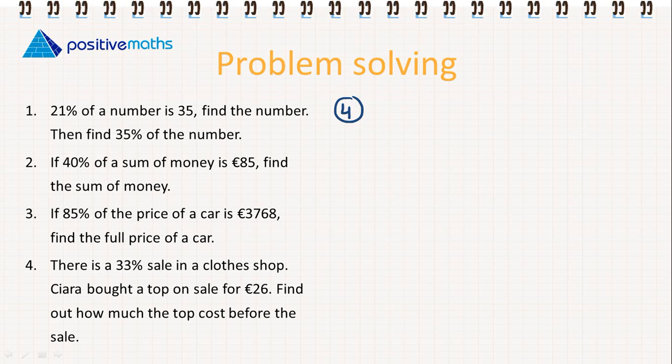The last part four. There is a 33% sale in a clothes shop. Kira bought a top on sale for 26 euro. Find out how much the top cost before the sale. If we're saying there's a 33% sale, we're usually saying it's 33% off.